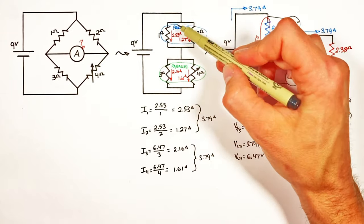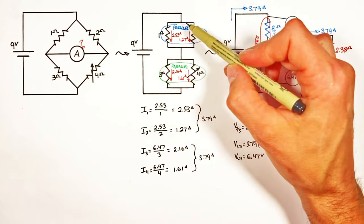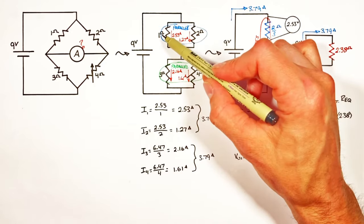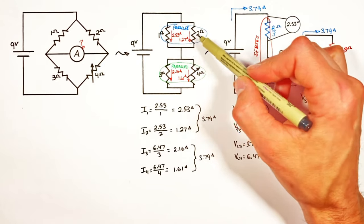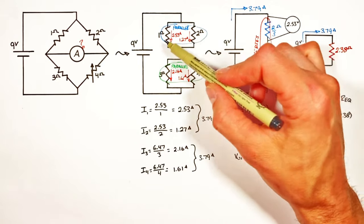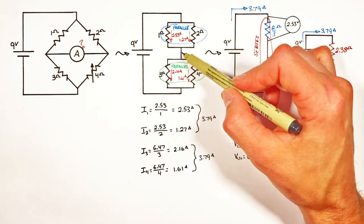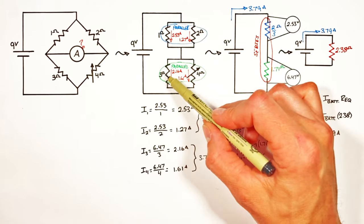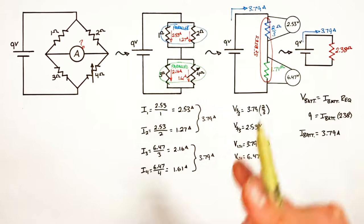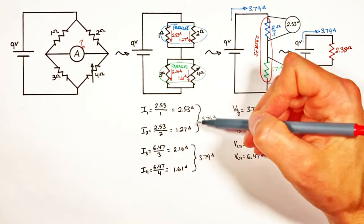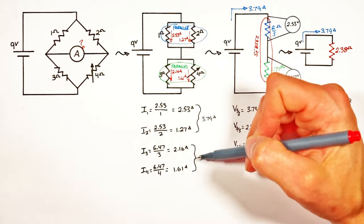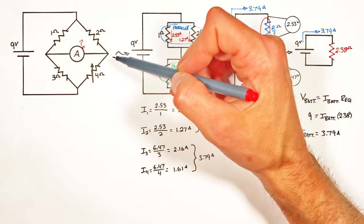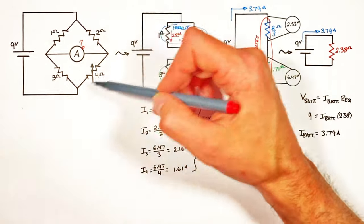That's because the charge, regardless of which resistor it passes through, must go through one of the first two resistors, then comes back together in the wire, and must then go through one of the second two resistors as well. Having solved for each of these four components, I want to go through and solve for the actual current across this bridge in our original circuit.